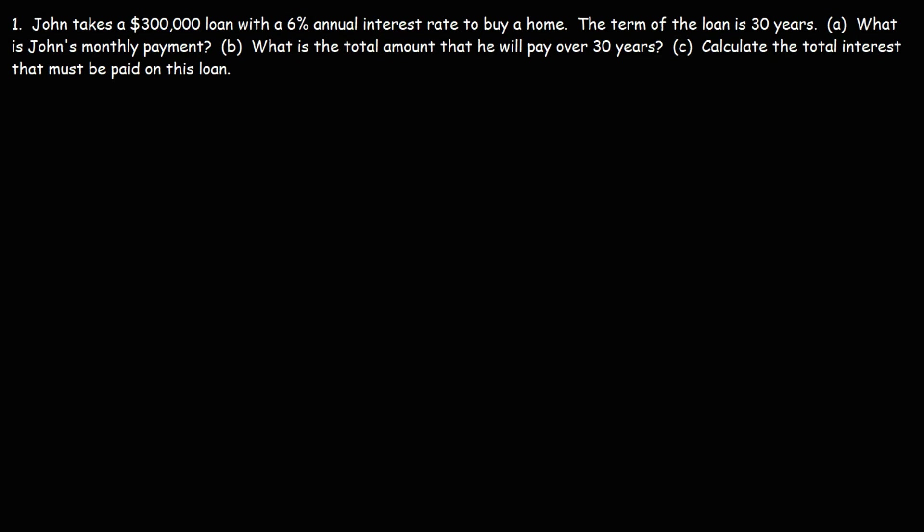In this video we're going to talk about how to use the amortization formula to calculate a monthly loan payment and also the total interest costs of that loan. So let's work on this example: John takes a $300,000 loan with a six percent annual interest rate in order to buy a home. The term of the loan is 30 years. What is John's monthly payment? First, let's write the formula.